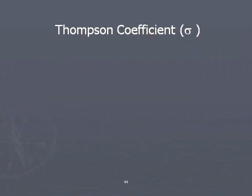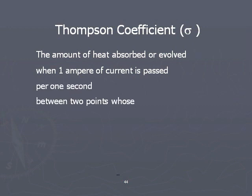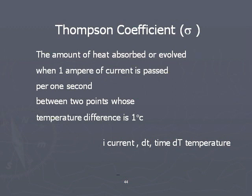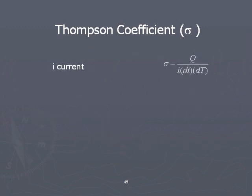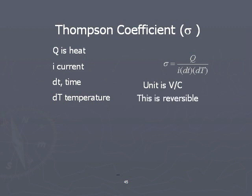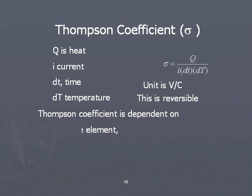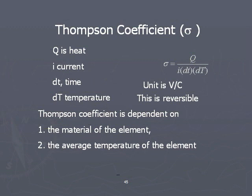To measure Thomson's effect, Thomson's coefficient (σ) is defined as the heat absorbed or evolved when one ampere of current flows for one second between two points with a temperature difference of one degree centigrade. If current I flows for time dt between points with temperature difference dT, and heat Q is produced, then σ = Q / (I · dt · dT). The unit of Thomson's coefficient is V per degree centigrade. This is a reversible phenomenon, and Thomson's coefficient depends on the material and the average temperature.